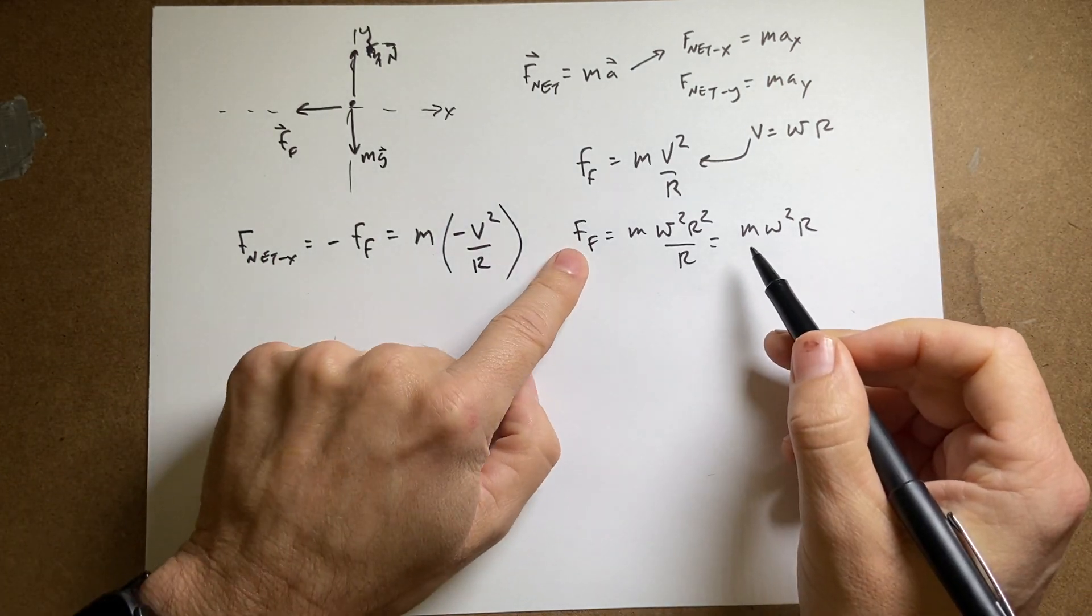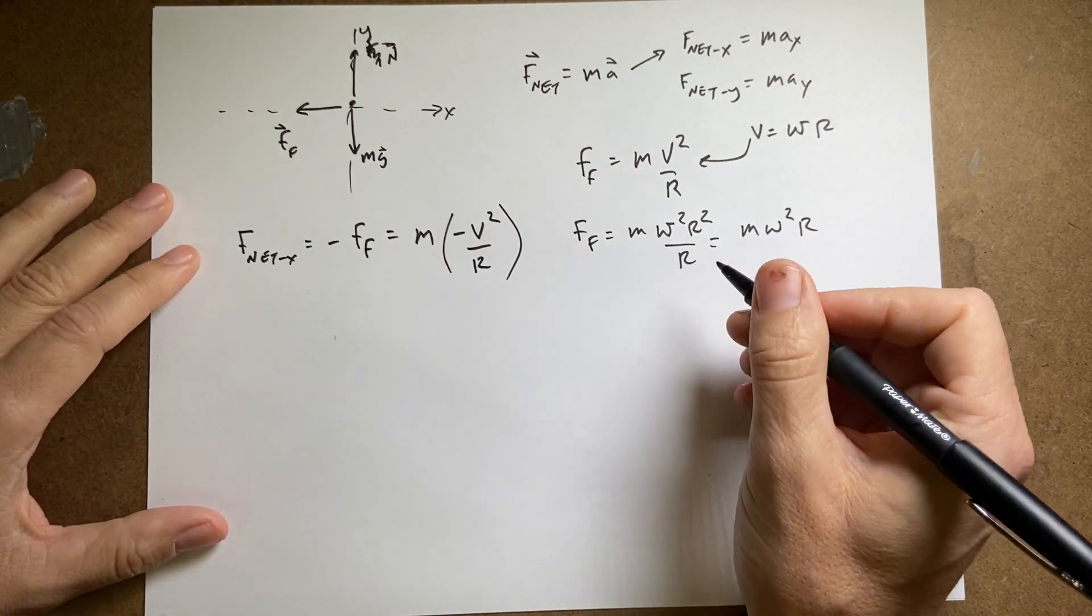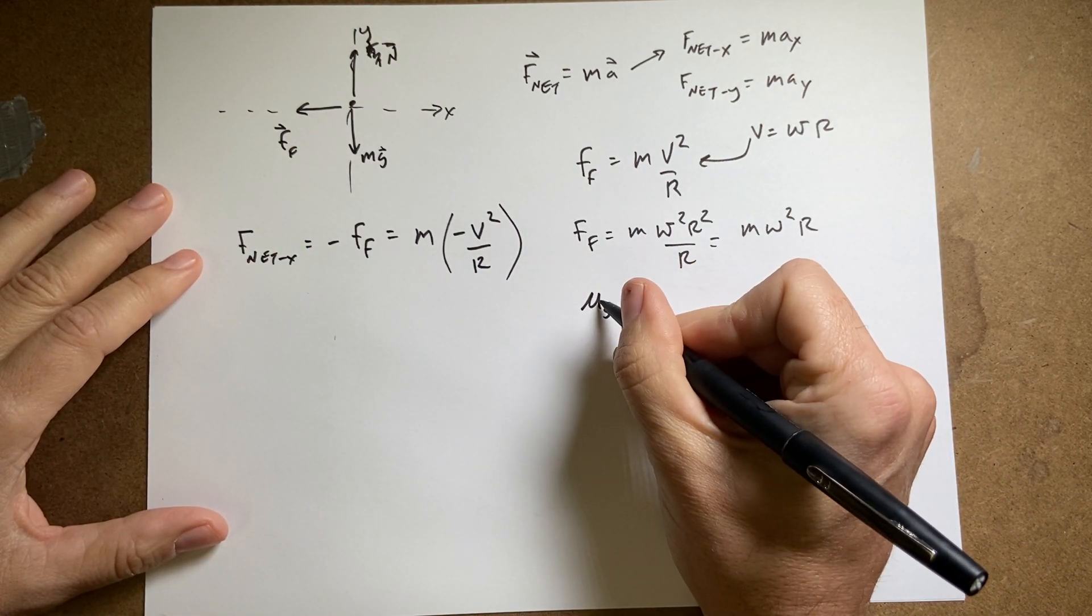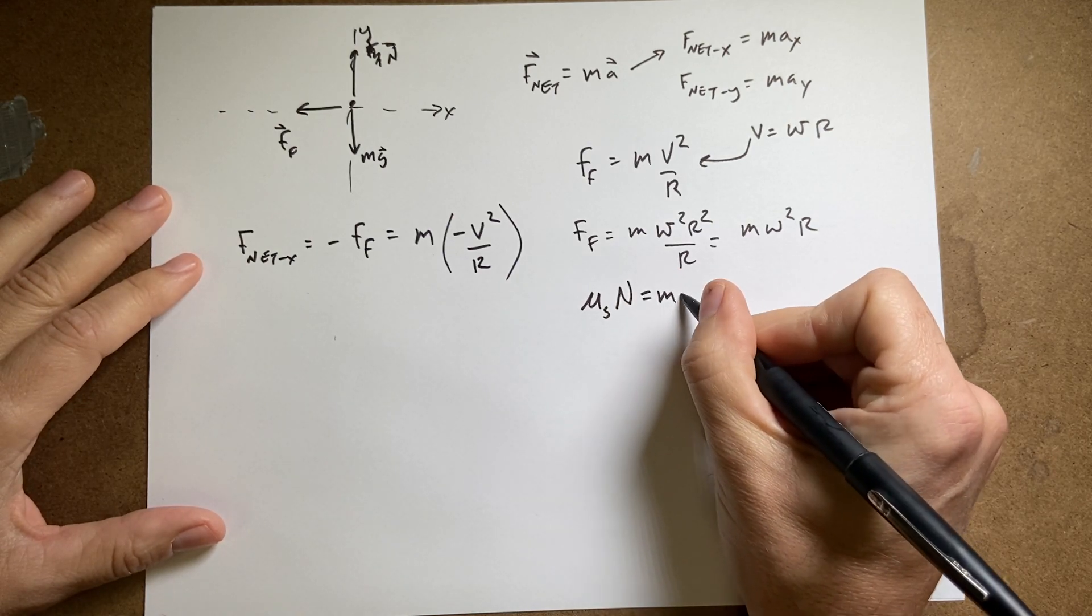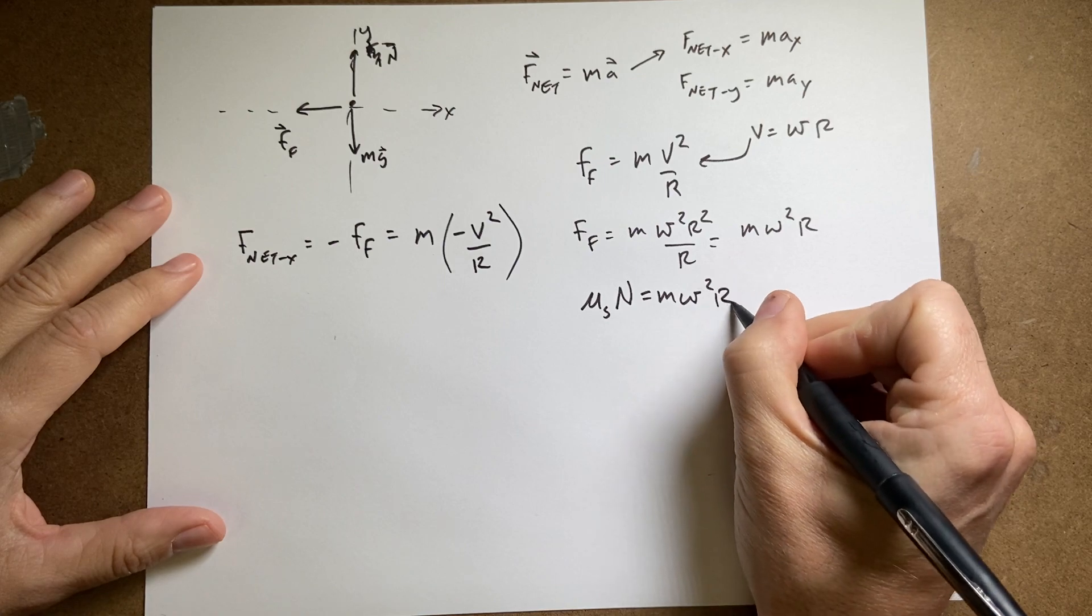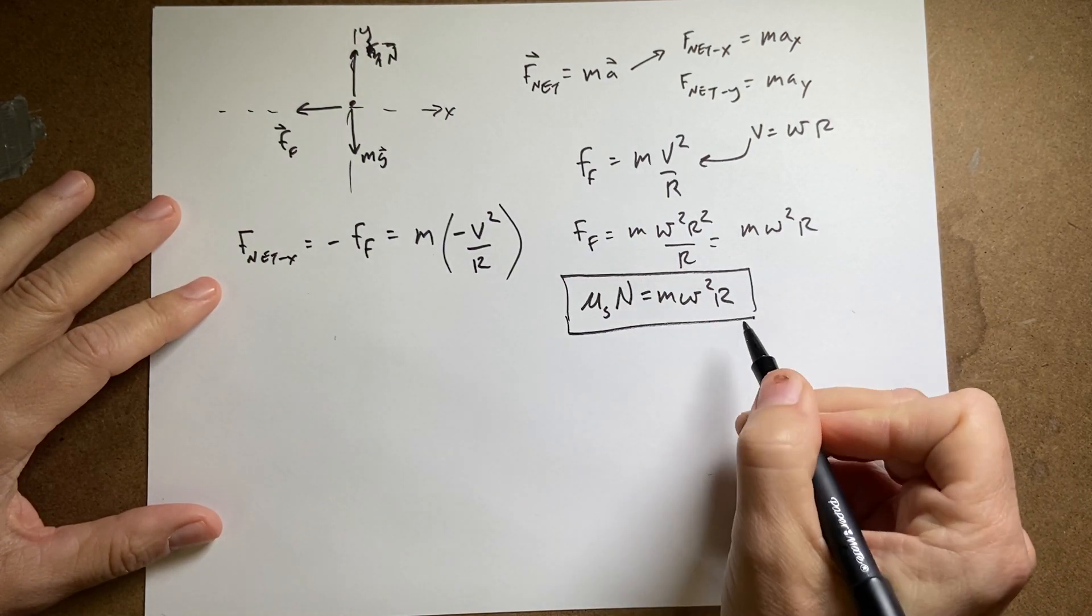Now one more thing, I already know the magnitude of that maximum friction force. It's going to be equal to mu s, the coefficient of static friction, times the normal force equals m omega squared r. So that's my equation of, my force equation in the x direction.